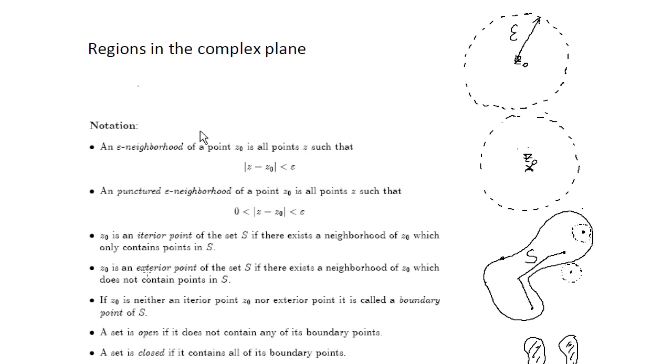An exterior point is the opposite of an interior point. An exterior point of some set S is an exterior point if there exists a neighborhood of this point z0. As in this example here you have this point z0. And I can find some neighborhood where all of the points in this neighborhood is not intersecting with the set capital S.